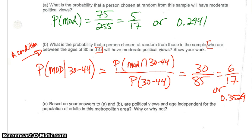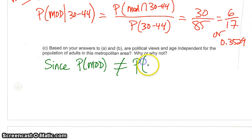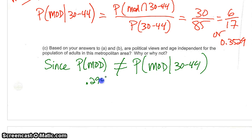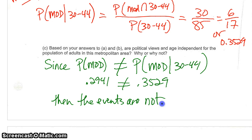Last question: based on your answers in parts A and B, are moderate political views and age independent? Since the probability of moderate (0.2941) is not equal to the probability of moderate given 30 to 44 (0.3529), the events are not independent.